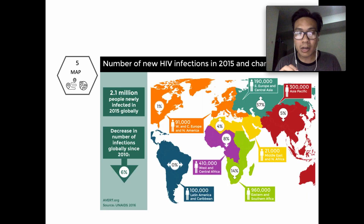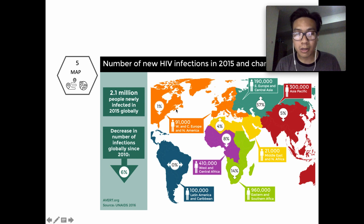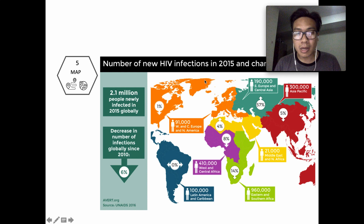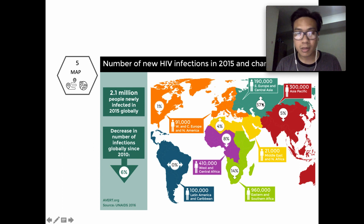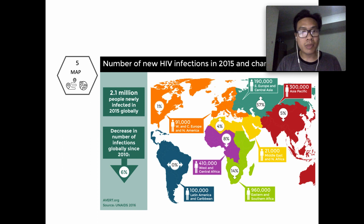Number five, you can map your information based on geographical location, and at the same time provide additional information regarding the data. As you can see, they provide geographical differences in new HIV infections, and also show whether the number is decreasing or increasing. Since 2010, there has been around a 6% decrease in the number of new infections globally. I think this map is a very clear way of communicating your information.